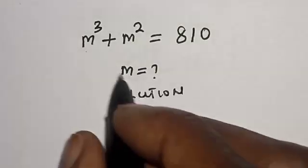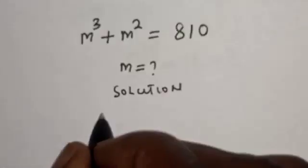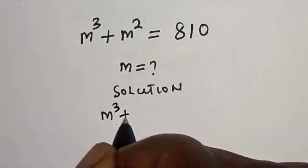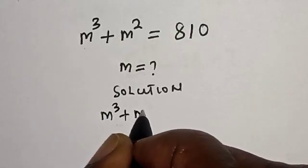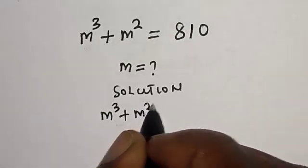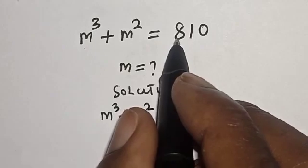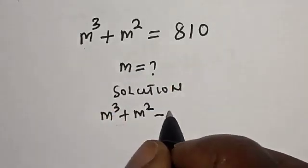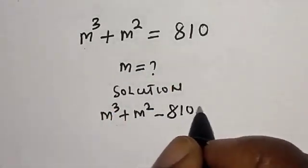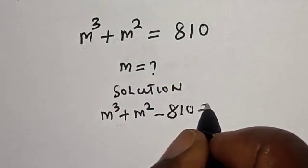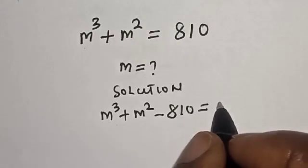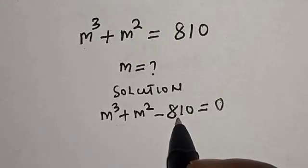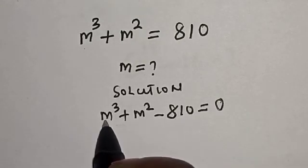Solution. We have m cubed plus m squared equal to 810. Let's bring it to this side: minus 810 is equal to 0. And then let's transform this 810 in this form.